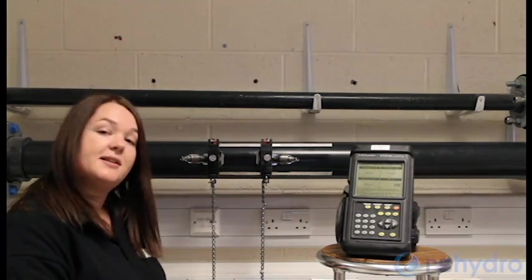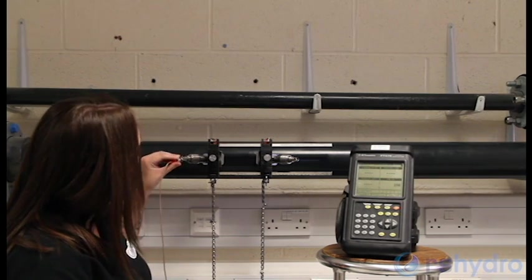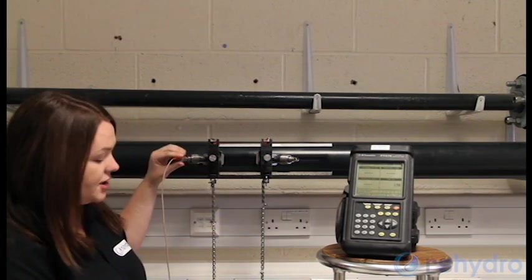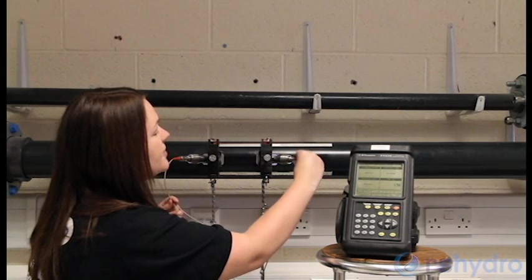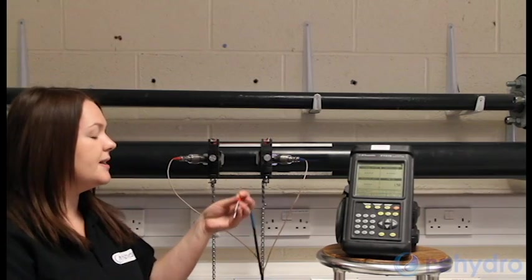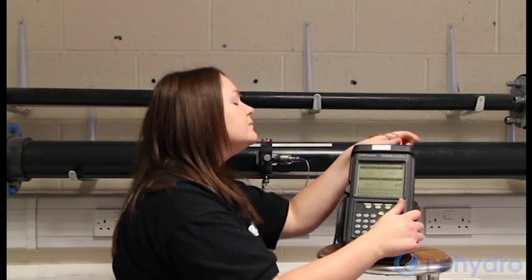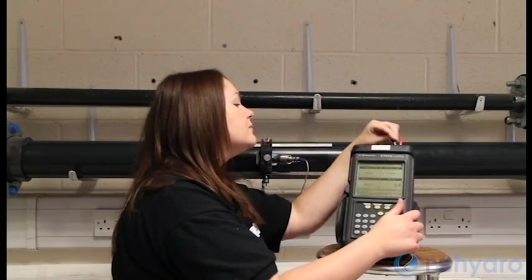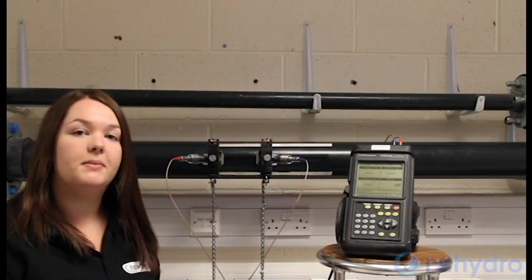The next step is to connect the cables. Put the red BNC onto the upstream transducer and the blue BNC onto the downstream transducer. Then connect the lemo ends into the PT878. That completes the installation.